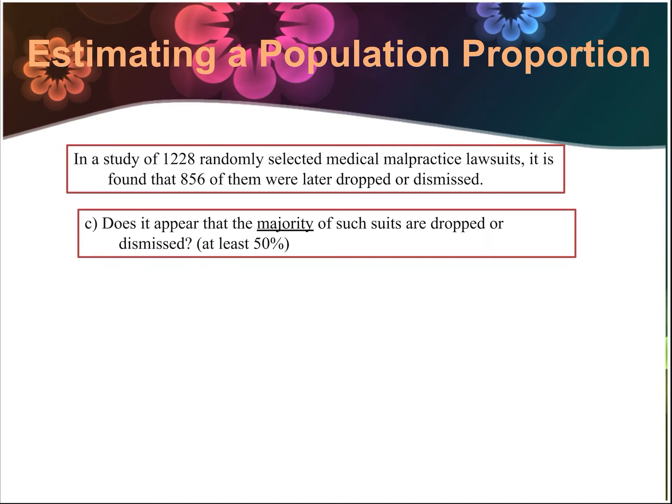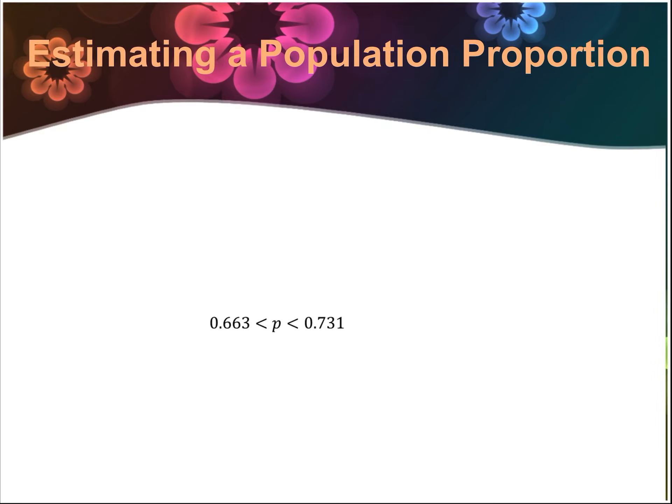Does it appear that the majority of such suits are dropped or dismissed — in other words, at least 50%? Since the proportion of suits dropped or dismissed is usually between 0.663 (66.3%) and 0.731 (73%), yes, it appears that the majority are dropped or dismissed, because even the smallest value in the interval — 66% — is well above 50%.